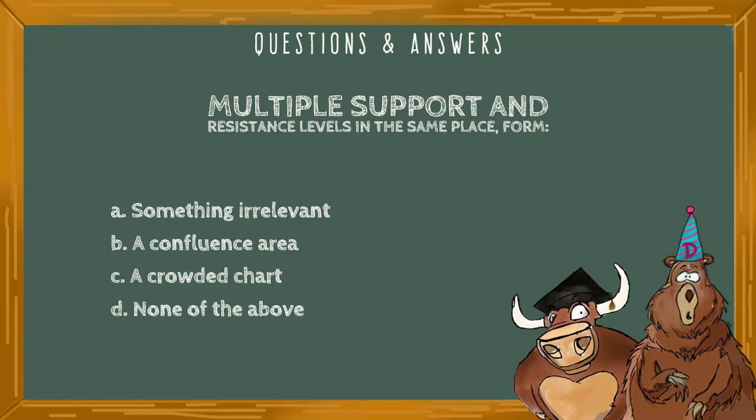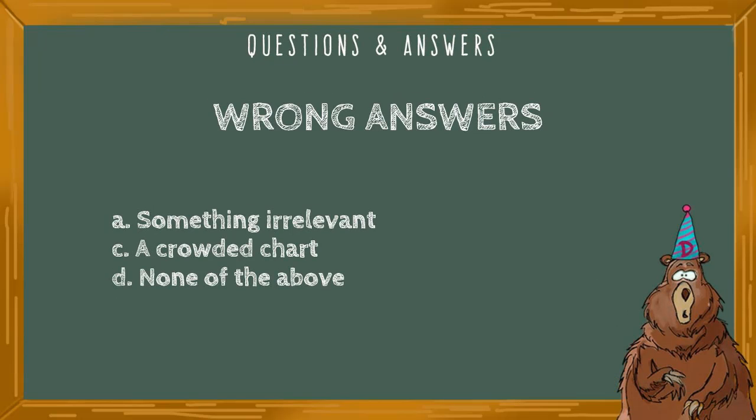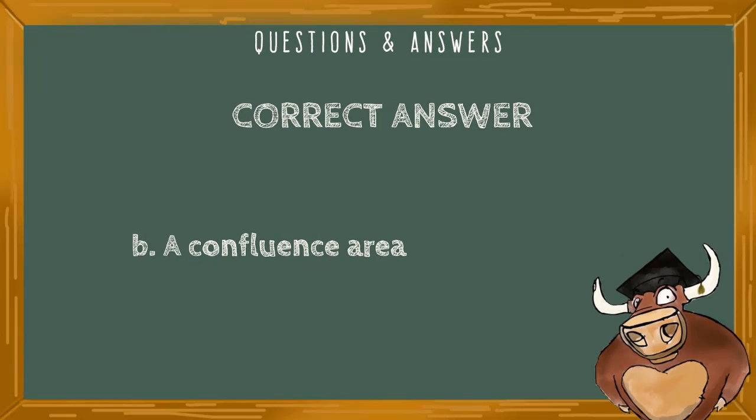Multiple support and resistance levels in the same place form: A, something irrelevant; B, a confluence area; C, a crowded chart; or D, none of the above. Wrong answers include A, something irrelevant; B, a crowded chart; and D, none of the above. The correct answer is B, a confluence area.